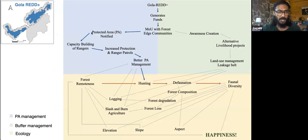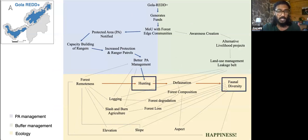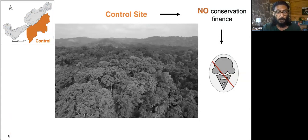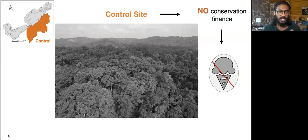Our question was: has biodiversity benefited due to Gola REDD+? To understand the overall causal model, we created a theory of change based on a historical timeline design developed by involving our on-ground partners. The blue area shows the PA management, the green area shows the buffer management working with local communities, and the yellow area shows the ecological processes that might be affected by these management practices. Our hypothesis was that a combination of alternative livelihood methods and effective PA monitoring would aid in biodiversity recovery by reducing hunting pressure.